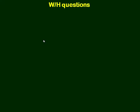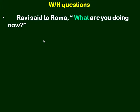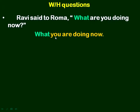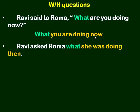Now we learn how to change WH questions — interrogative into indirect speech. Ravi said to Roma, 'What are you doing now?' First change the interrogative into assertive: 'What you are doing now.' Now let us change it into indirect speech: Ravi asked Roma what she was doing. 'You' refers to Roma, so the pronoun changed to 'she.' This is present continuous, which changed into past continuous: 'she was doing.'